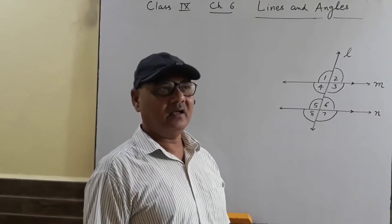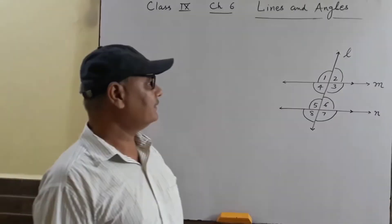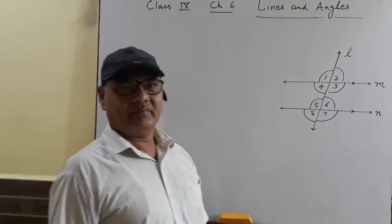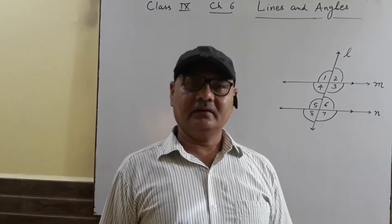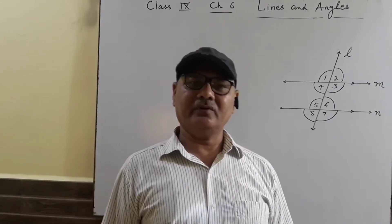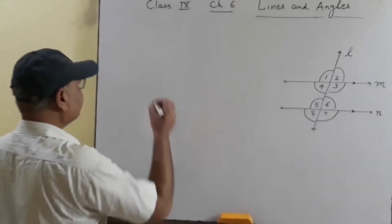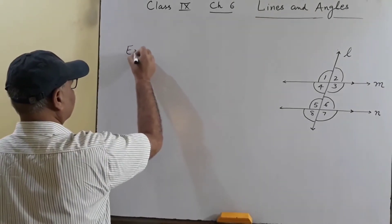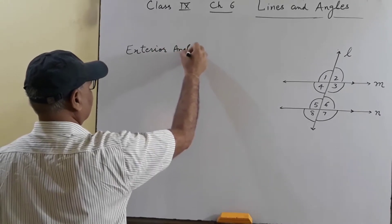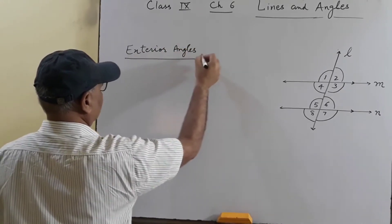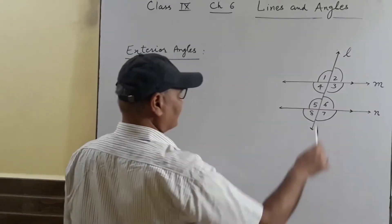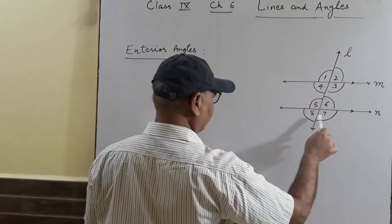Let's see what type of angles are formed when a line intersects two transversals. This chapter covers many angle types which are important to understand. First, Exterior Angles. The angles that are outside are all Exterior Angles: angles 1, 2, 7, and 8 are all Exterior Angles.